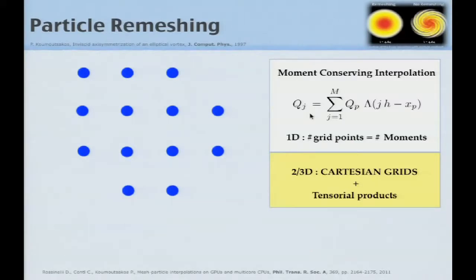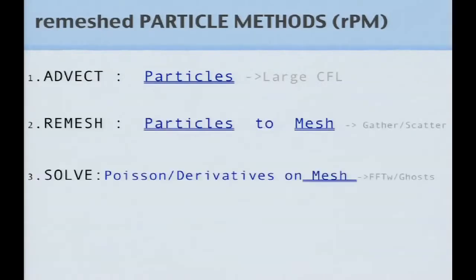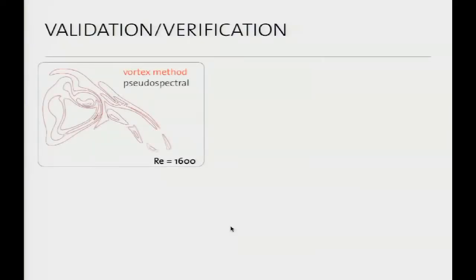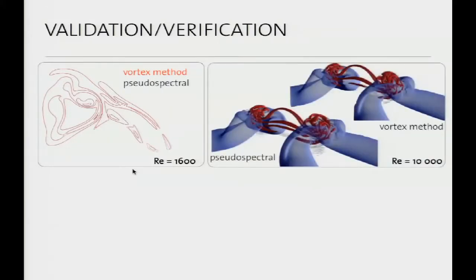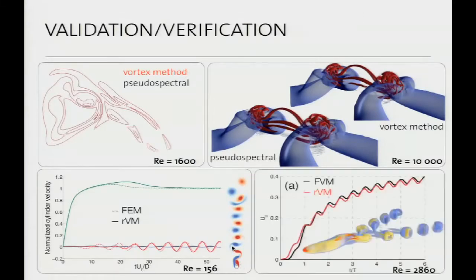The method: move particles using Lagrangian advection allowing high CFL numbers, then particles to mesh, perform Poisson and derivative operations on the mesh, and mesh nodes become particles. This is new compared to existing particle-in-cell codes. We have validated against pseudo-spectral methods for unbounded flows, finite element methods for free-falling bodies, and finite volume methods — matching all of them. The method has capabilities that a single approach like pseudo-spectral, finite elements, or finite volume may not accomplish as straightforwardly.